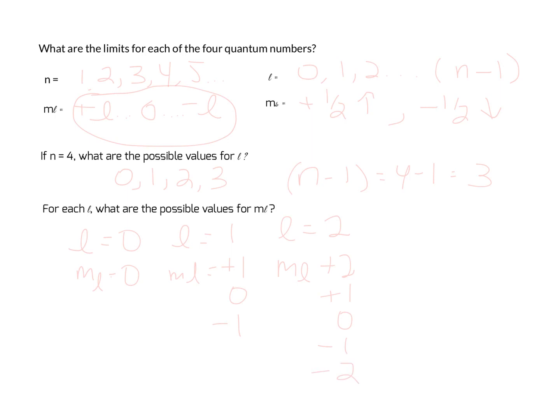And finally, if l is equal to 3, our m sub l choices are plus 3, plus 2, plus 1, 0, and minus 3, minus 2, minus 1. And that's how you work with quantum numbers.